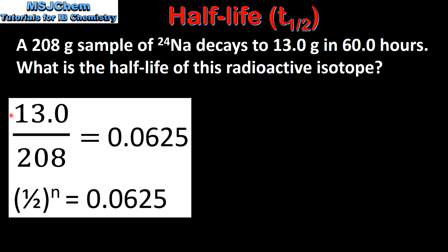The first step is to divide the remaining mass by the original mass which gives us 0.0625. Therefore half raised to the power n, where n is the number of half-lives that have passed, equals 0.0625.